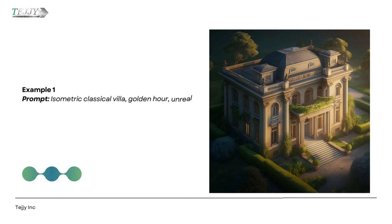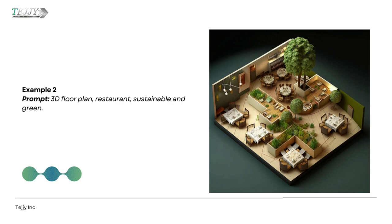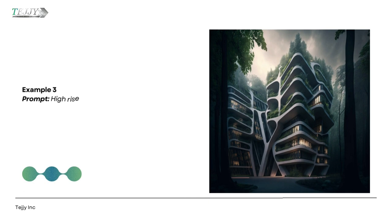Examples of Midjourney architecture: Example 1 prompt — Isometric classical villa, golden hour, unreal engine render. Example 2 prompt — 3D floor plan, restaurant, sustainable and green. Example 3 prompt — High-rise building inside a forest, Zaha Hadid style.